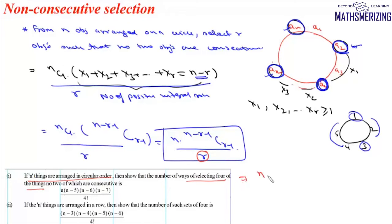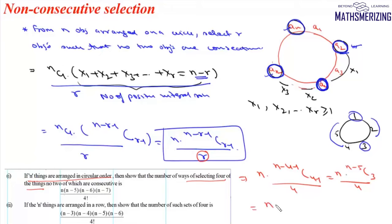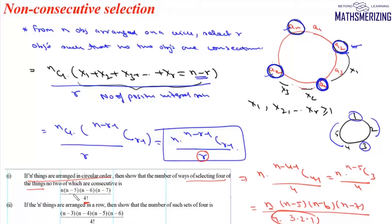Here n is simply n and r is 4. So it will be n × (n - 4 - 1)C(4-1) / 4, which is n × (n-5)C3 / 4. Expanding: n × (n-5)(n-6)(n-7) / (4 × 3 × 2 × 1), which equals n(n-5)(n-6)(n-7) / 4!. This is how we select four objects so that no two are consecutive when n things are arranged on a circle.